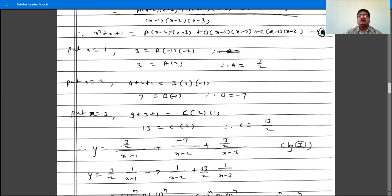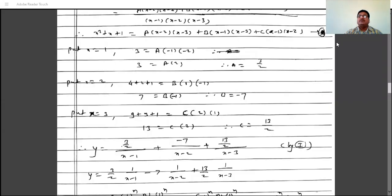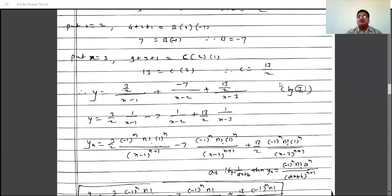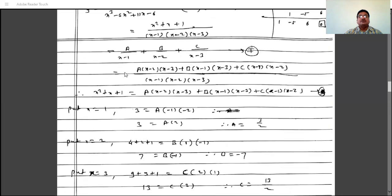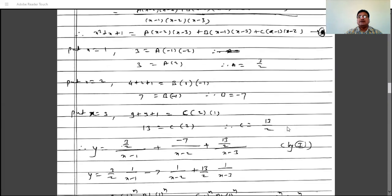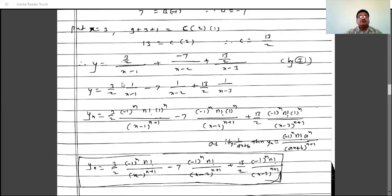For x equals 3, LHS is 9 plus 3 plus 1 equals 13, and C times (2)(1) gives 2C, so C equals 13 by 2. Therefore y equals (3/2) times 1/(x minus 1) minus 7 times 1/(x minus 2) plus (13/2) times 1/(x minus 3).